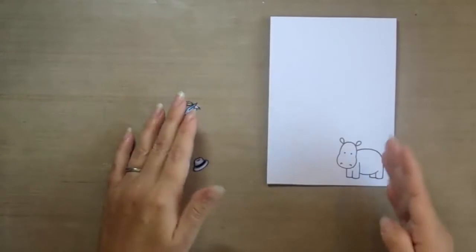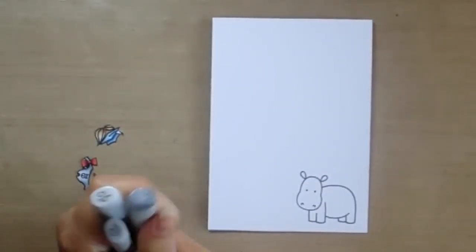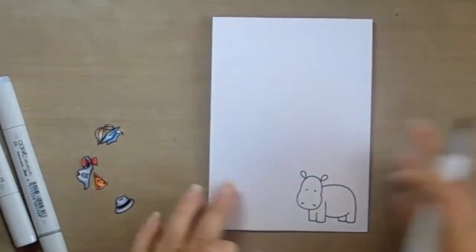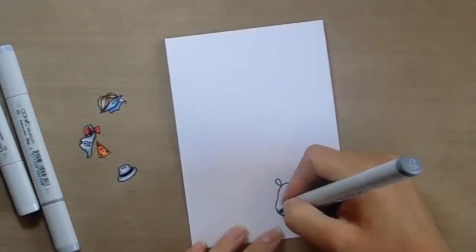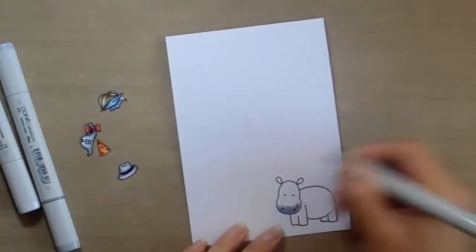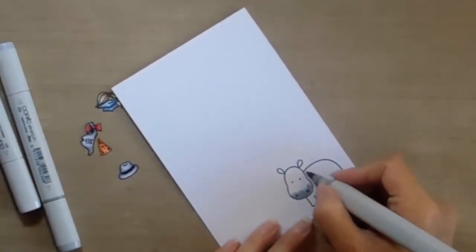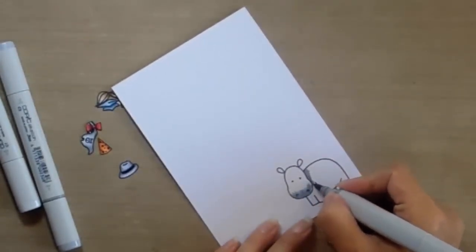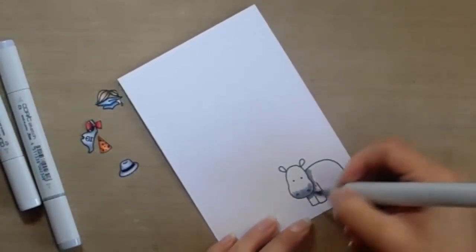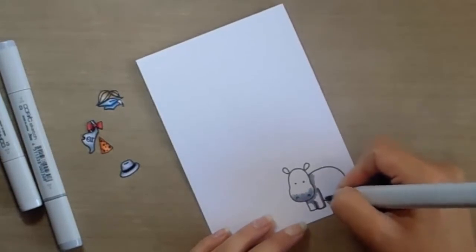Then you're going to want to color this image in. For my Hippo, I'm using C5, C3 and C1. I'm just going to do a quick simple Copic coloring where I flick in from the most shaded area. So the bottom of his snout will be shaded, underneath his head will be shaded, his back leg, the sides of his back leg, under his tummy.